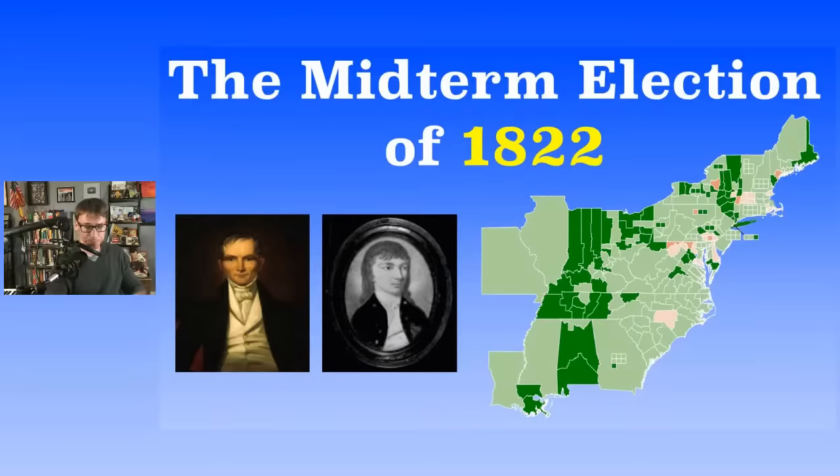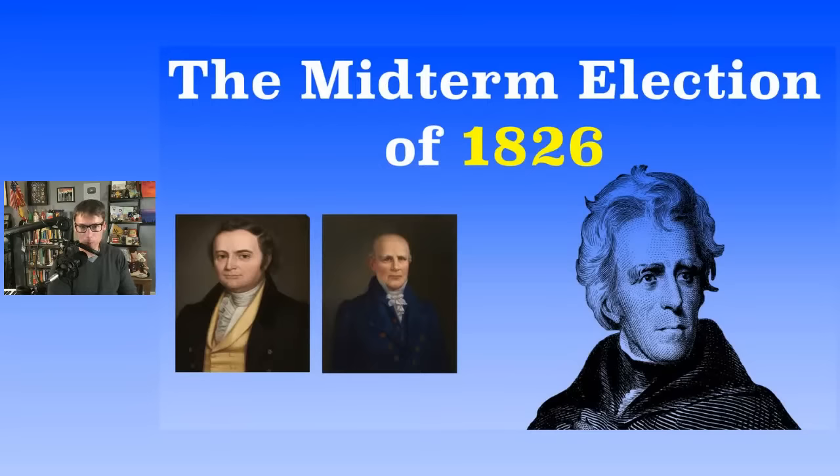This is the last first-party system midterm election in 1826. Andrew Jackson's picture is there because this marks a turning point in American history — you see the Jacksonians for the first time in these midterm elections. And you have other people who are like, 'I don't like this Jackson guy — he scares the heck out of me.' They became known as the anti-Jacksonians.